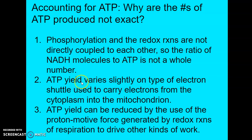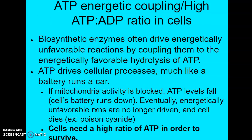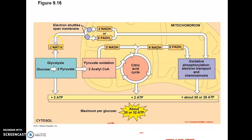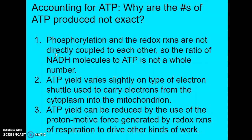The second reason is that ATP yield varies slightly depending on the type of electron shuttle used to carry electrons from the cytoplasm into the mitochondrion. The inner mitochondrial membrane is impermeable to NADH from glycolysis, so electrons have to be shuttled across. If the electrons are passed to NADH — as in a liver cell or heart cell — we produce about 2.5 ATPs. But if the electrons are passed to FADH2, such as in a brain cell, then only about 1.5 ATPs are made.